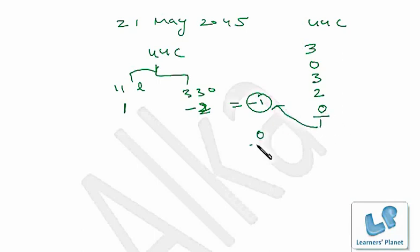And this 1 and this minus 1 equals 0. That means 21st May 2045 is a Sunday, and I am sure your answer is matching with mine.